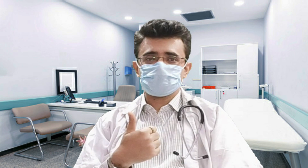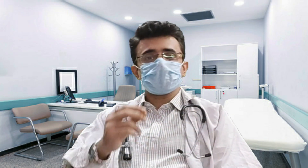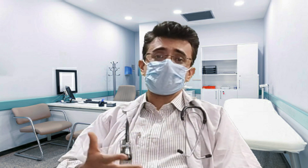There are two main causes of stroke: a blocked artery, called ischemic stroke, or leaking or bursting of blood vessels, called hemorrhagic stroke. Some people may experience only a temporary interruption of blood flow to the brain, known as transient ischemic attack or TIA, also called a mild stroke.